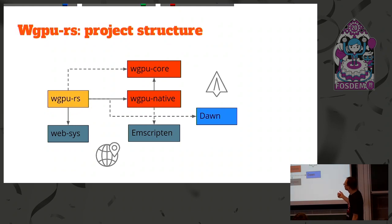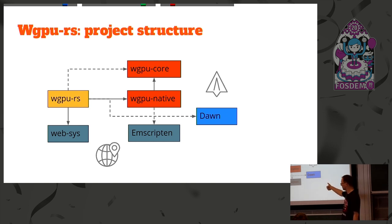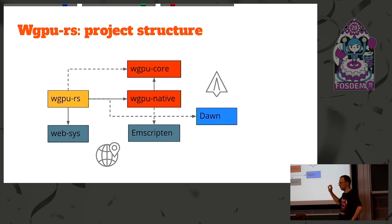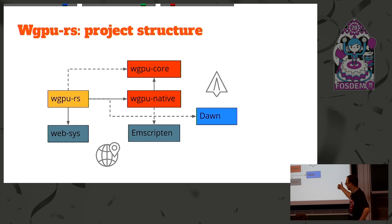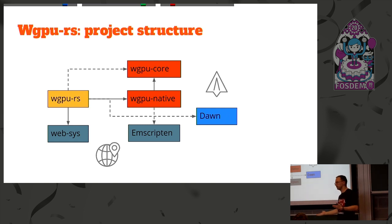This is the structure of WGPU. The current path is from WGPU-RS — our Rust wrapper — to native, which is a C API implementation that goes into core, which goes into GFX. What we will have is that WGPU-RS will call WebSys to allow you to target the web directly without going through Emscripten. Alternatively, you can use Emscripten to target the web, or use the shared path between WebGPU native and DAWN because they share the same C headers, and run on top of Google's implementation.